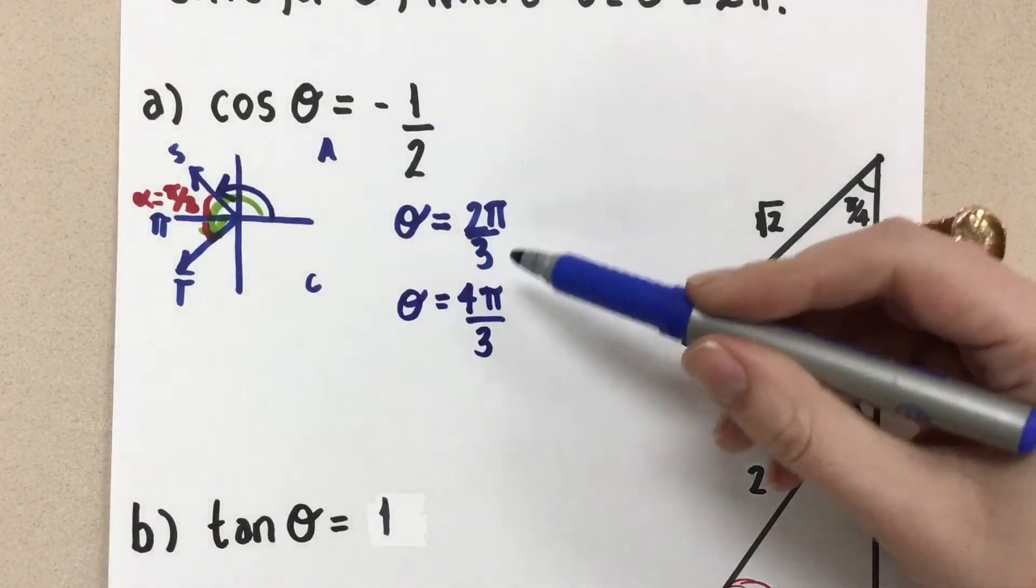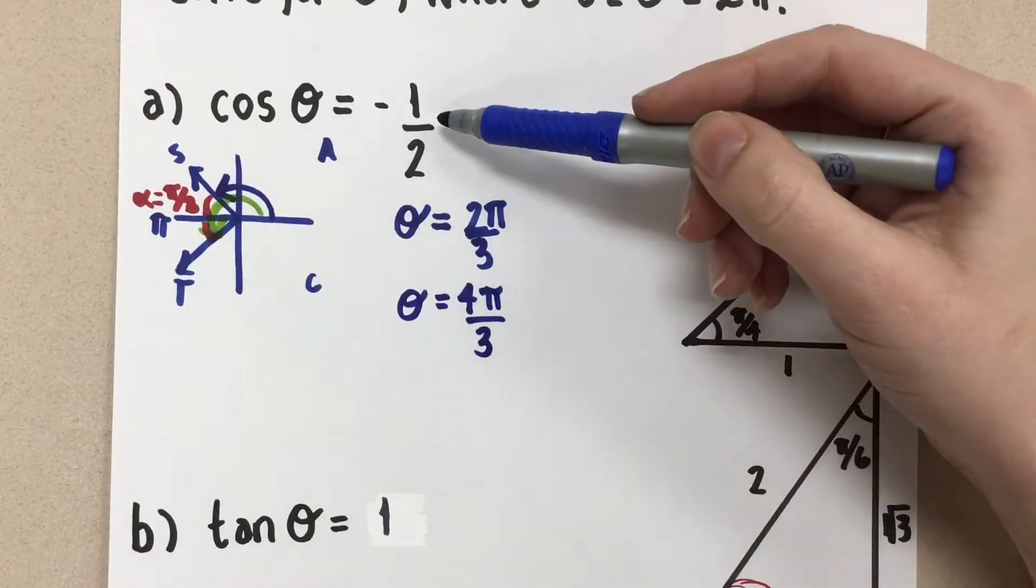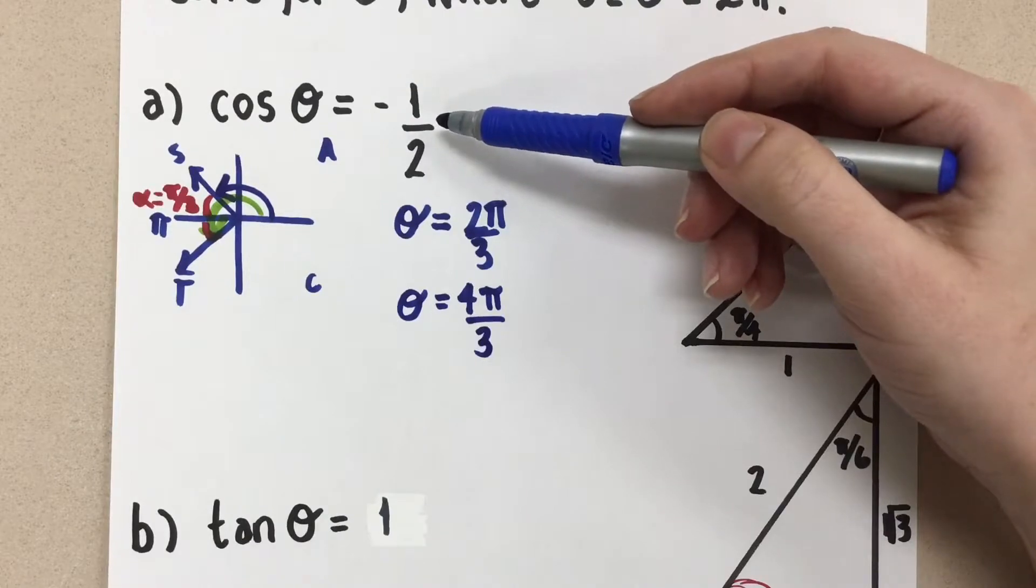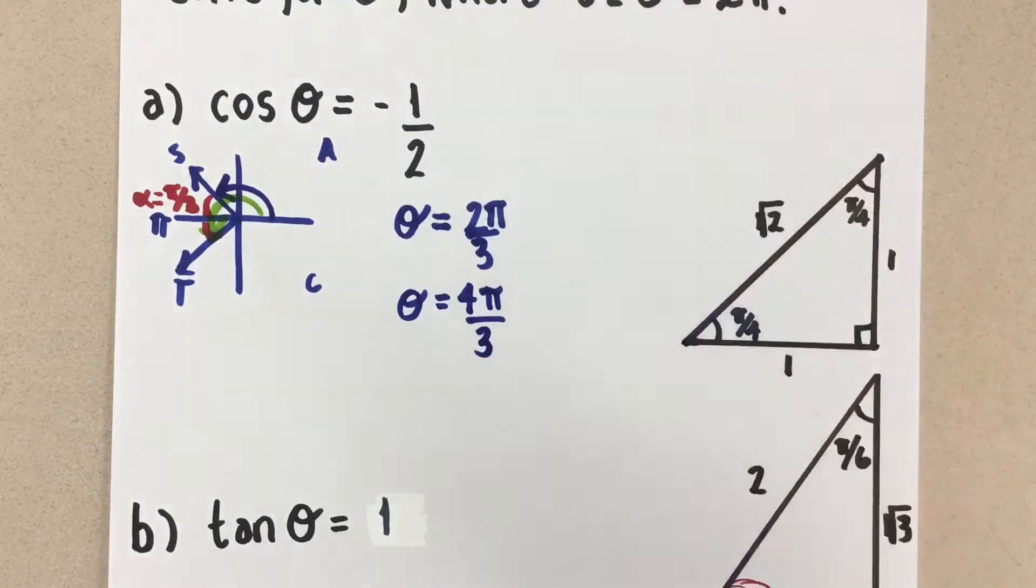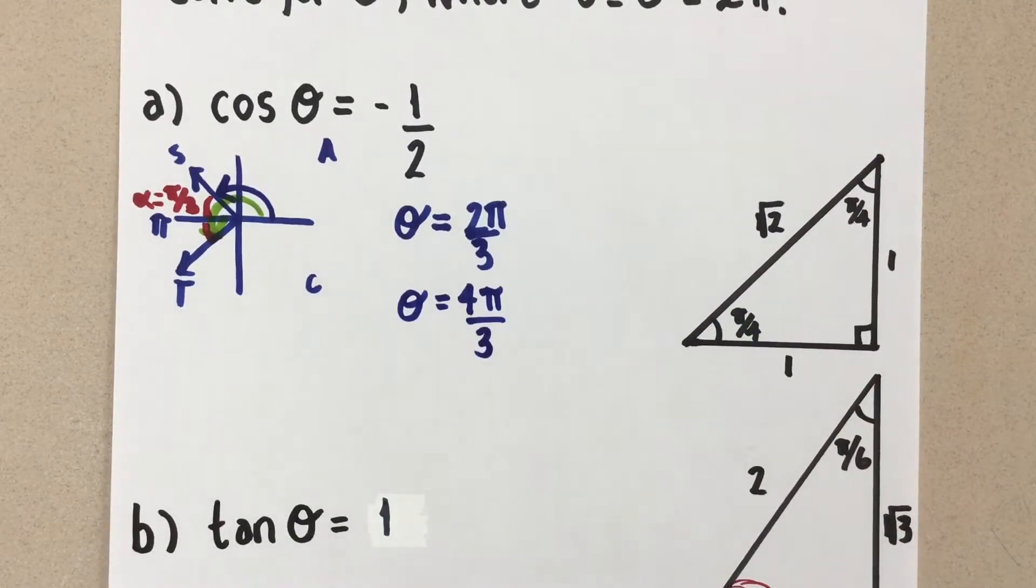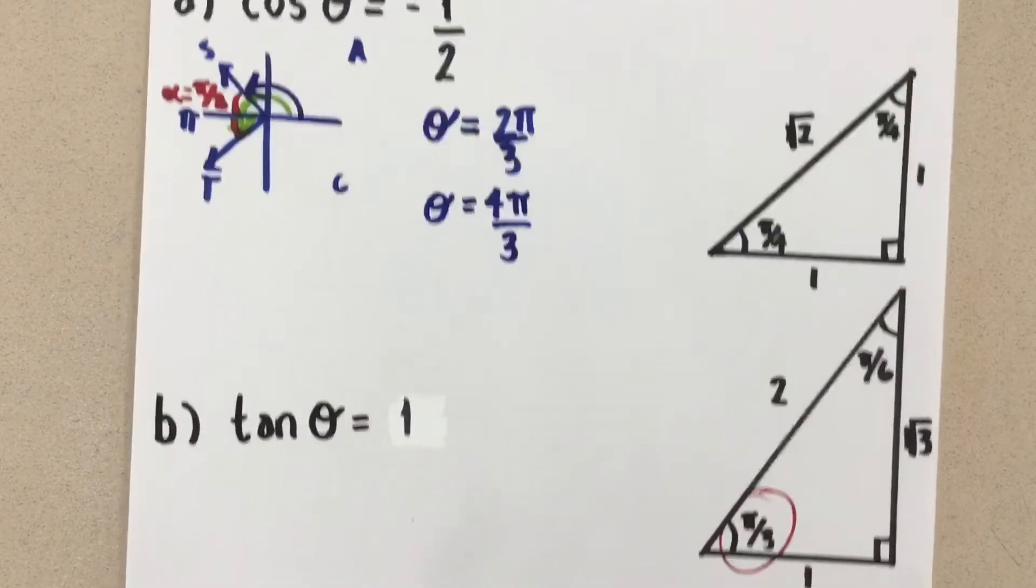So both of these angles will satisfy cosine theta equals negative one over two.